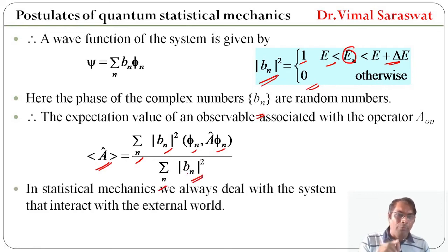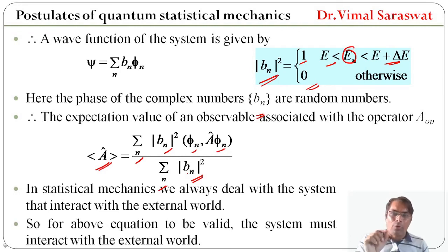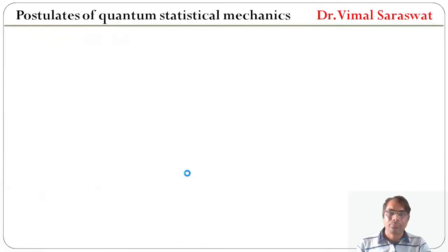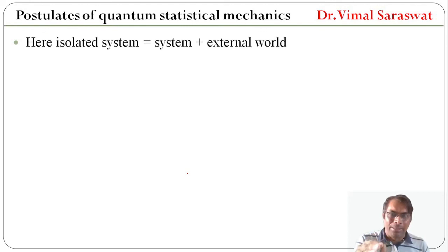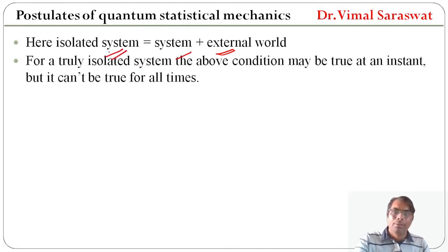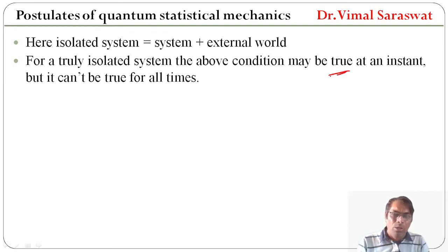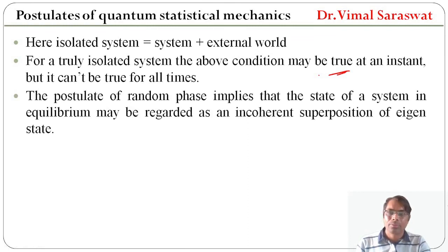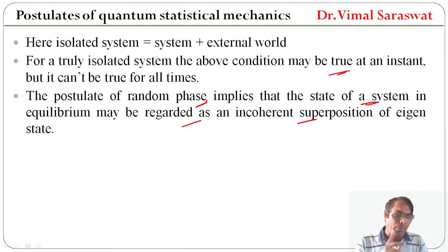In statistical mechanics, we always deal with systems that interact with the external world. So for the above equation to be valid, the system must interact with the external world. Here, the isolated system means system plus external world — if we include the external world with the system, then this is actually our isolated system. For a truly isolated system, the above condition may be true at an instant but it cannot be true for all times. The postulate of random phase implies that the state of a system in equilibrium may be regarded as an incoherent superposition of eigenstates.